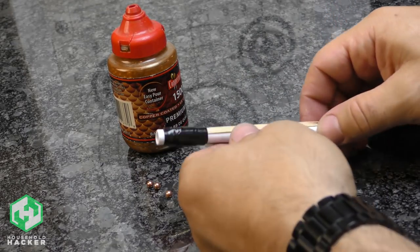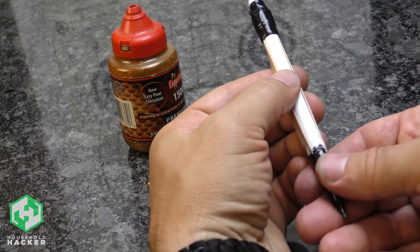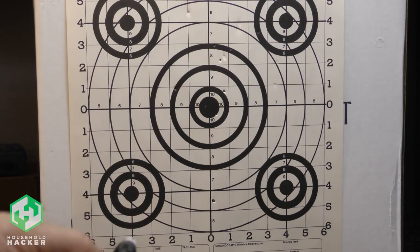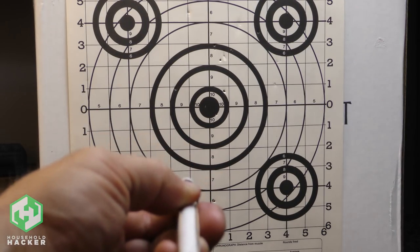You can use BBs or anything small enough to fit in the barrel. Get yourself a target, preferably with styrofoam or cardboard as a backing and fire away. It should go without saying here, but be responsible with this, because this little gadget can fire at 20 to 30 feet per second.